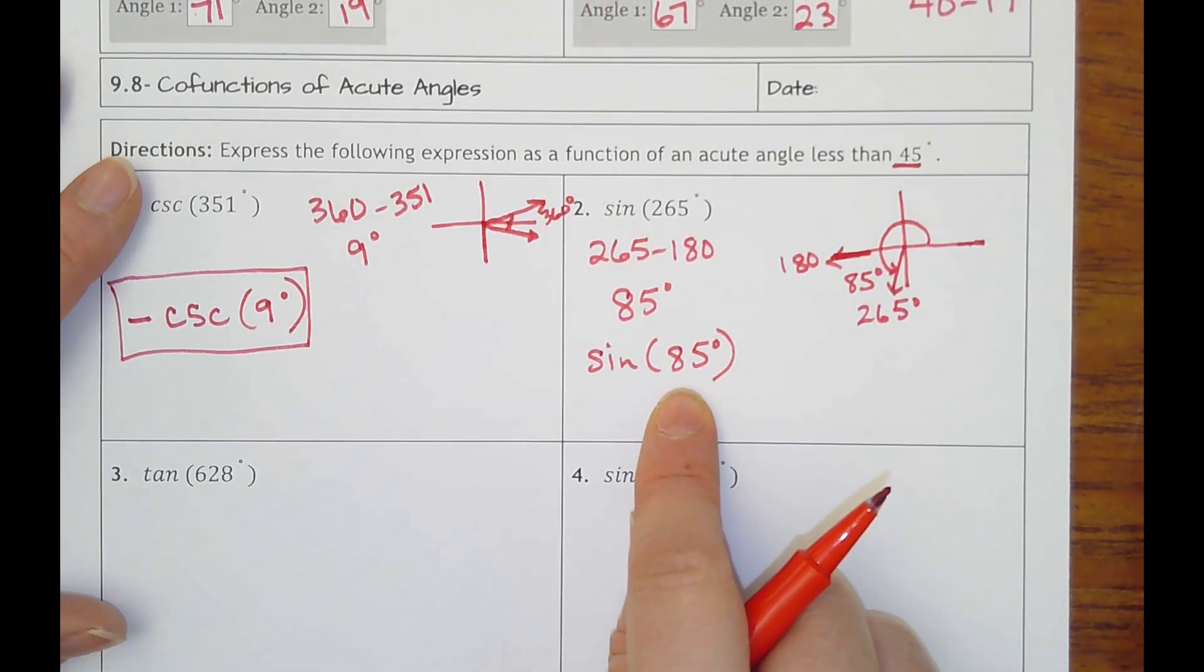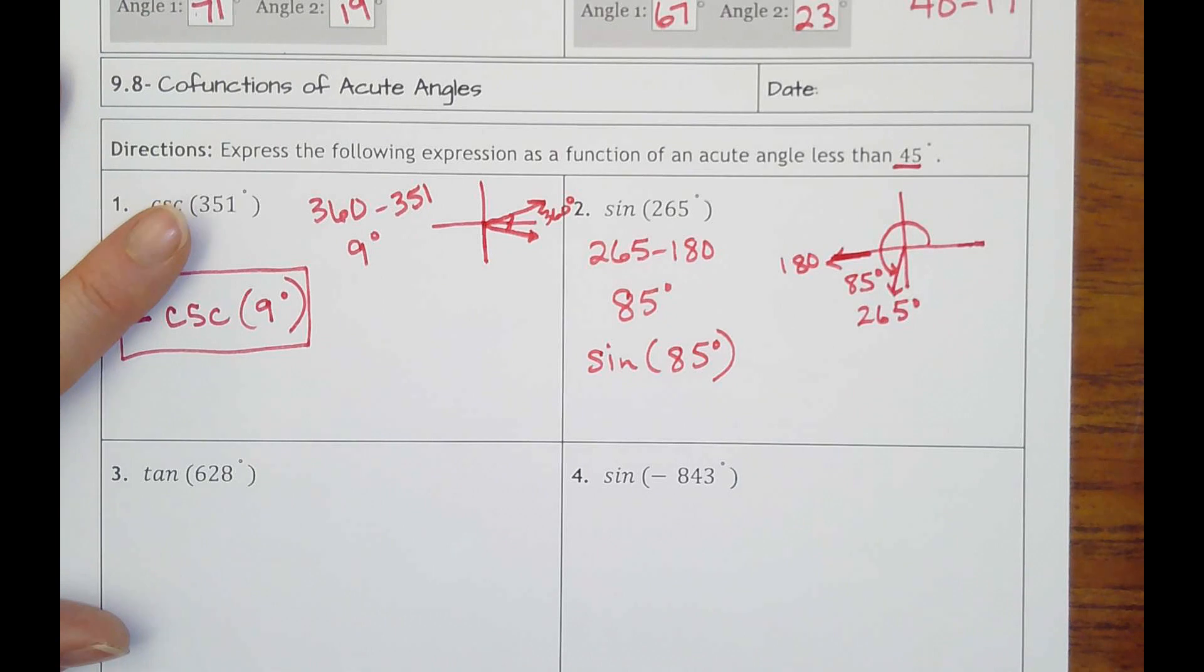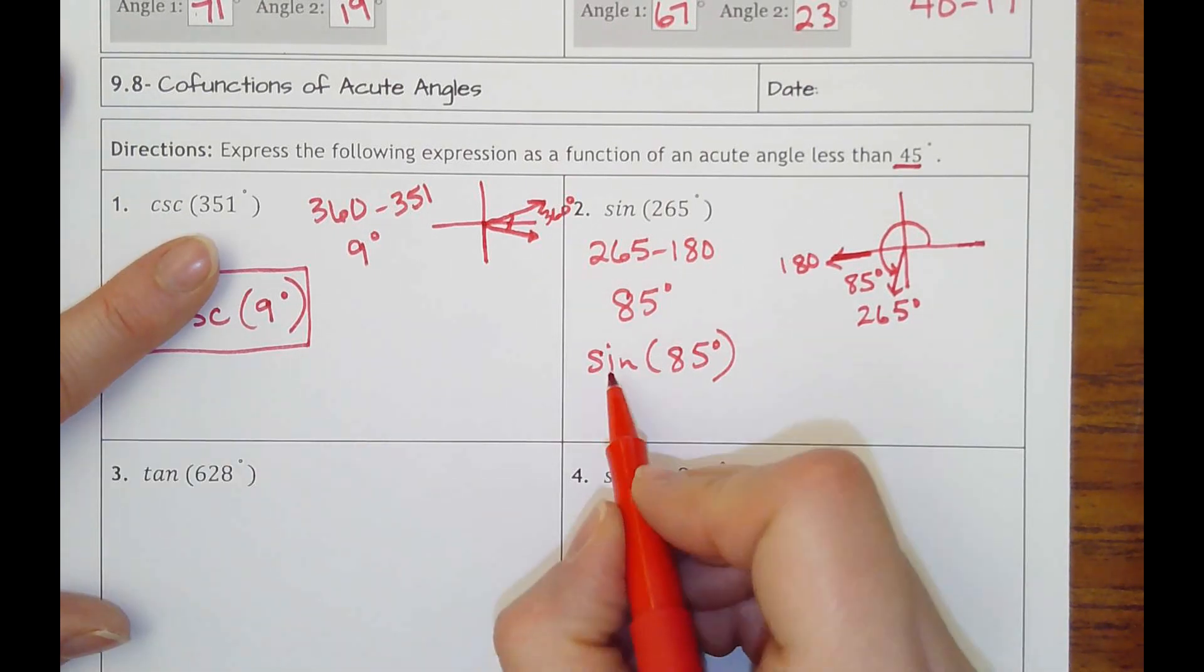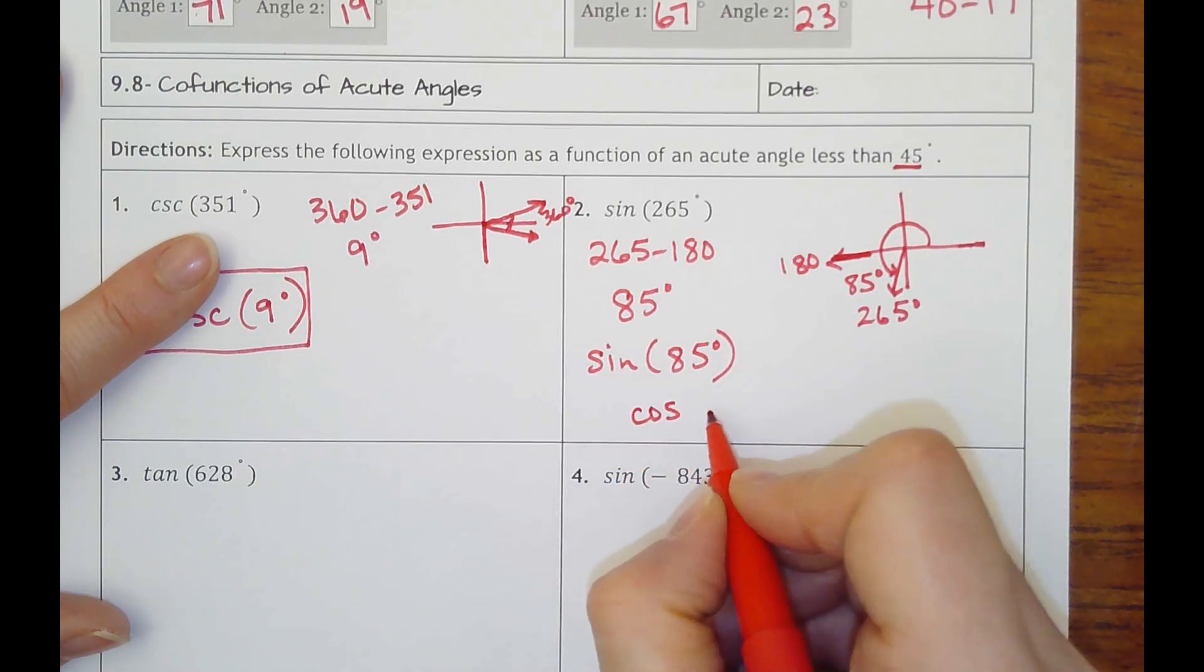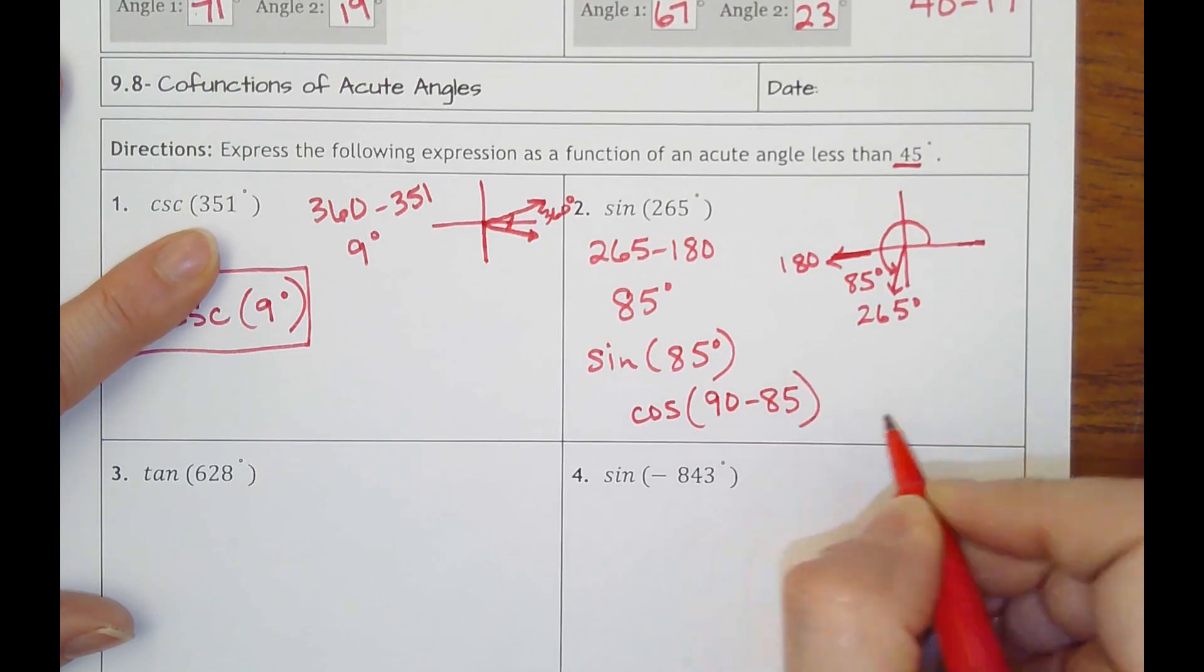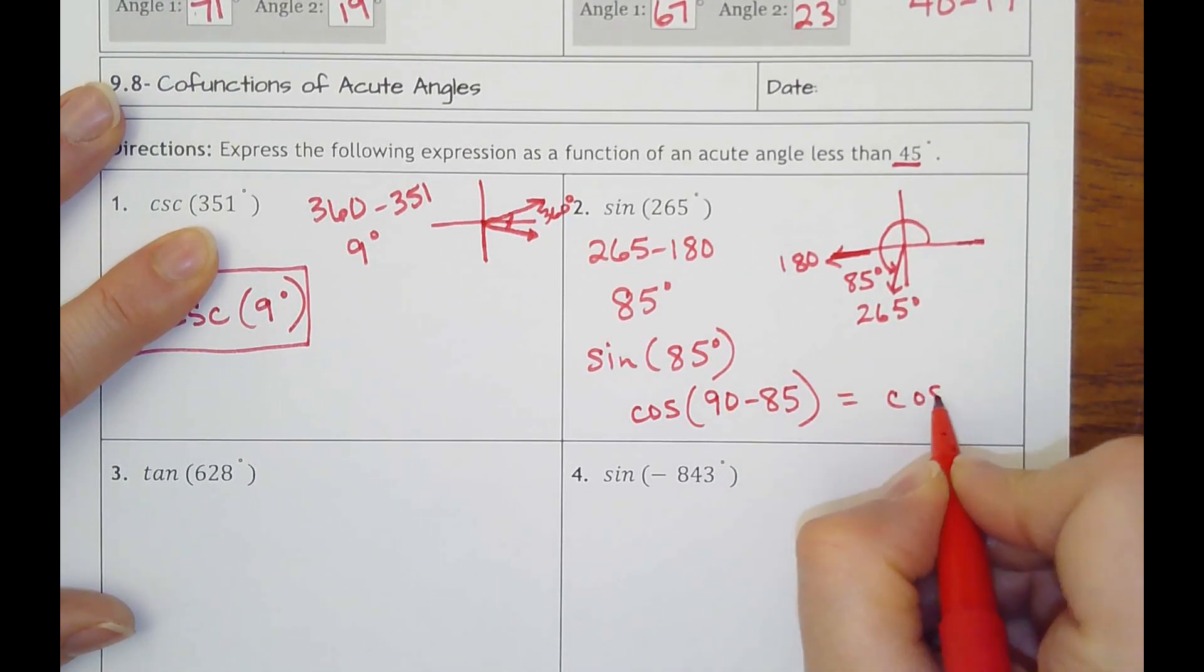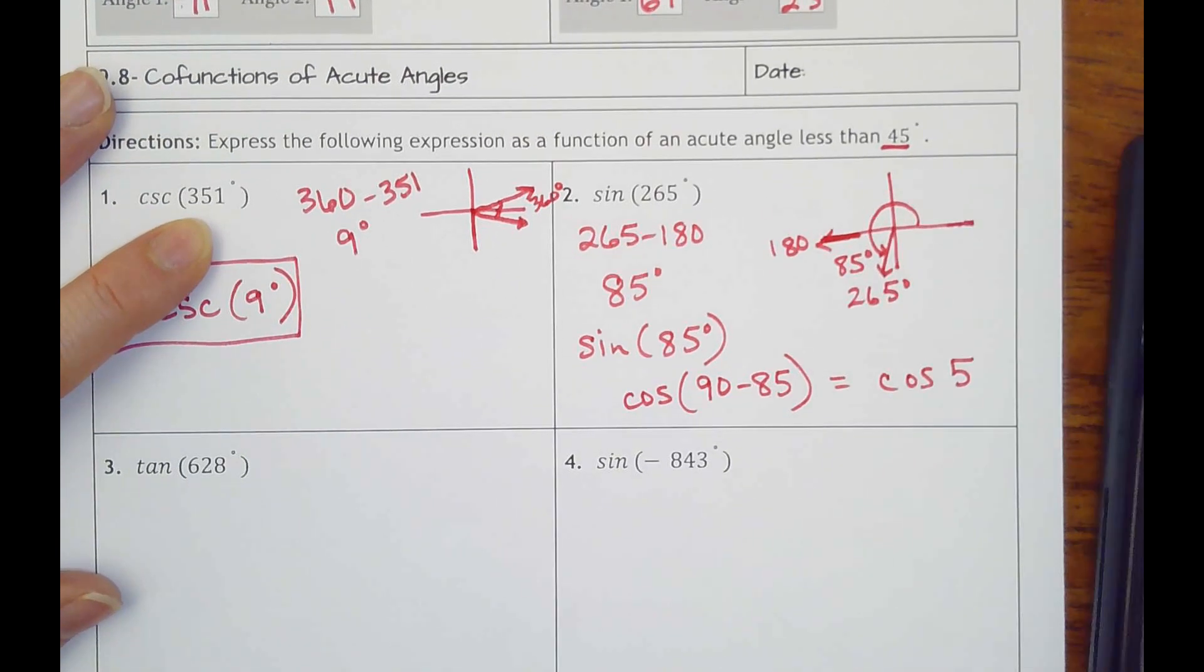But we have a problem. 85 is not less than 45. So we got to figure out what can we do to play around with this so that we get the same number when I put it on my calculator. So then what I want you to think about is what is the co-function. So what goes with sine? Remember the cosine? So it'd be cosine of, it's always our angle, or sorry, 90 minus our angle. So 90 minus our angle of 85 would make cosine of 5. That works.